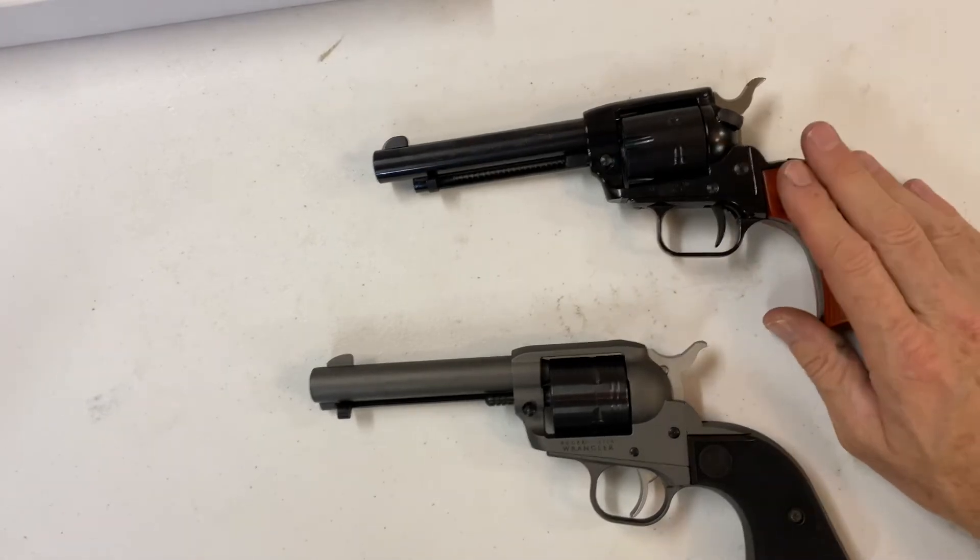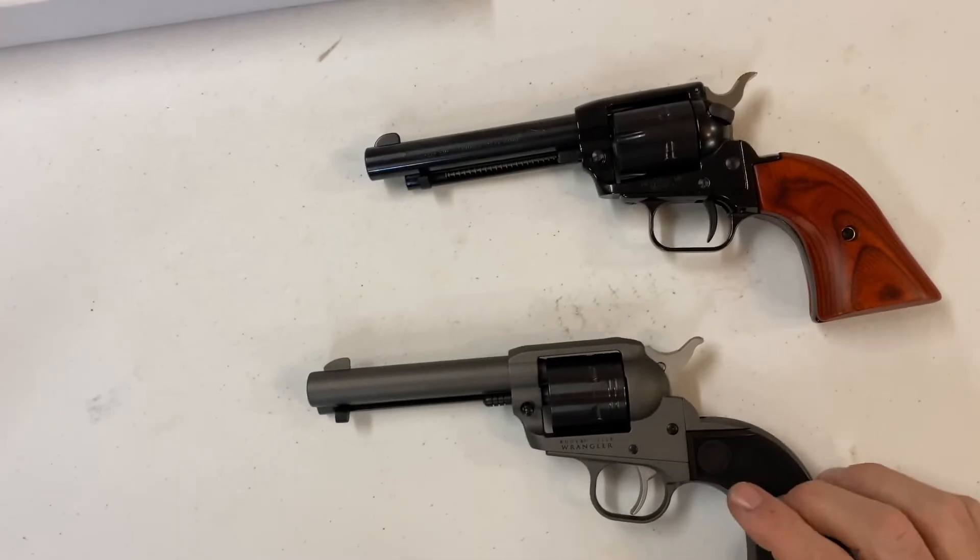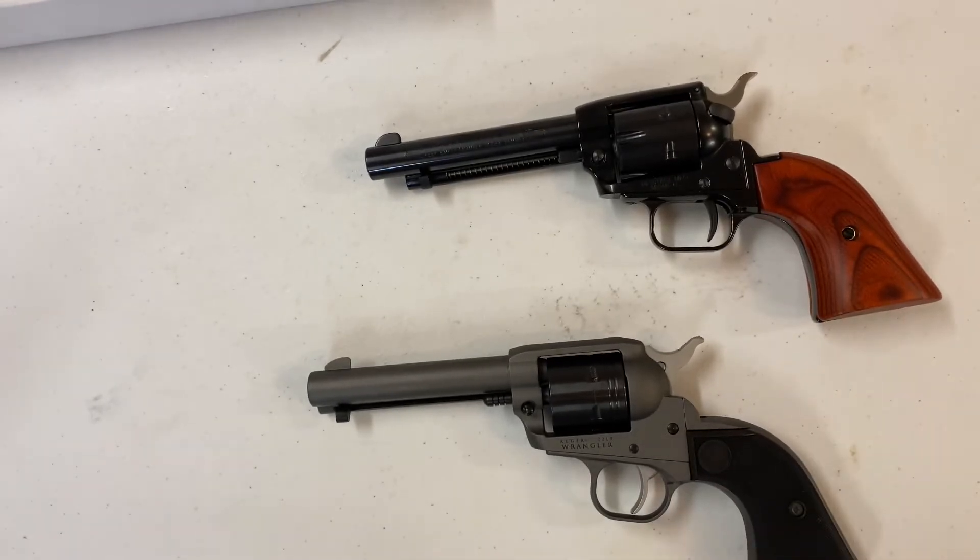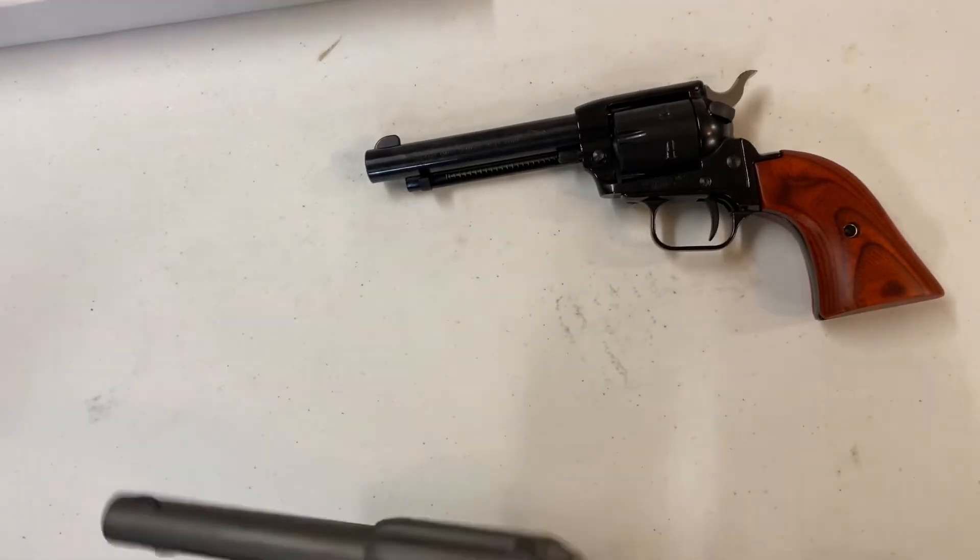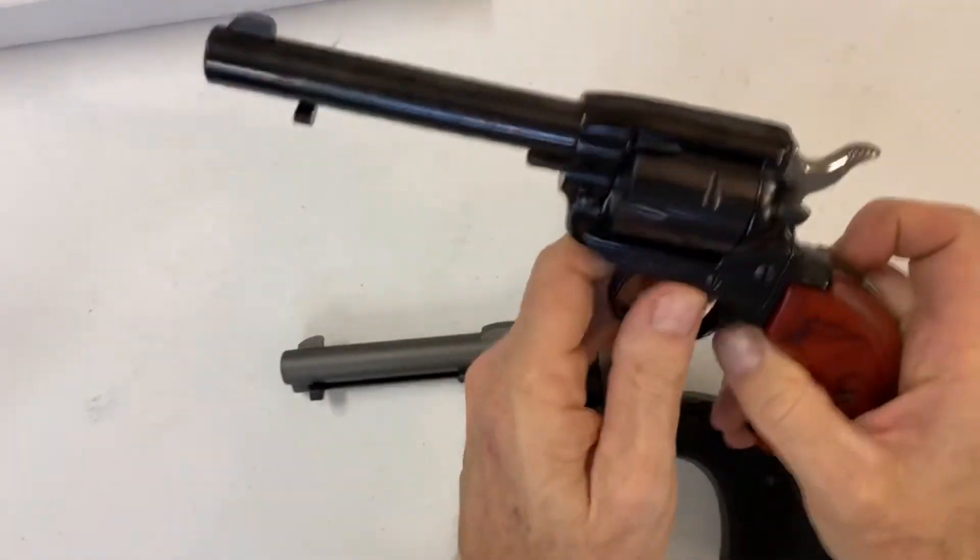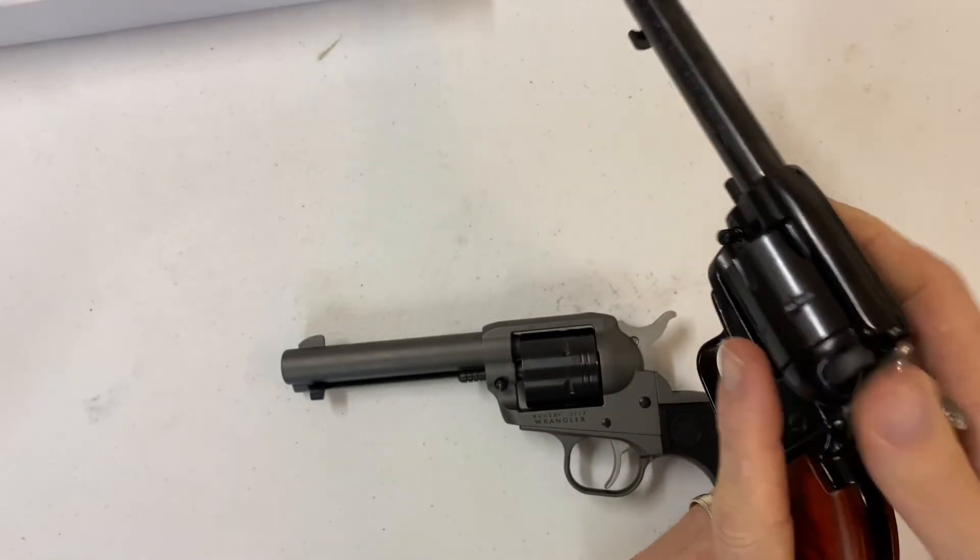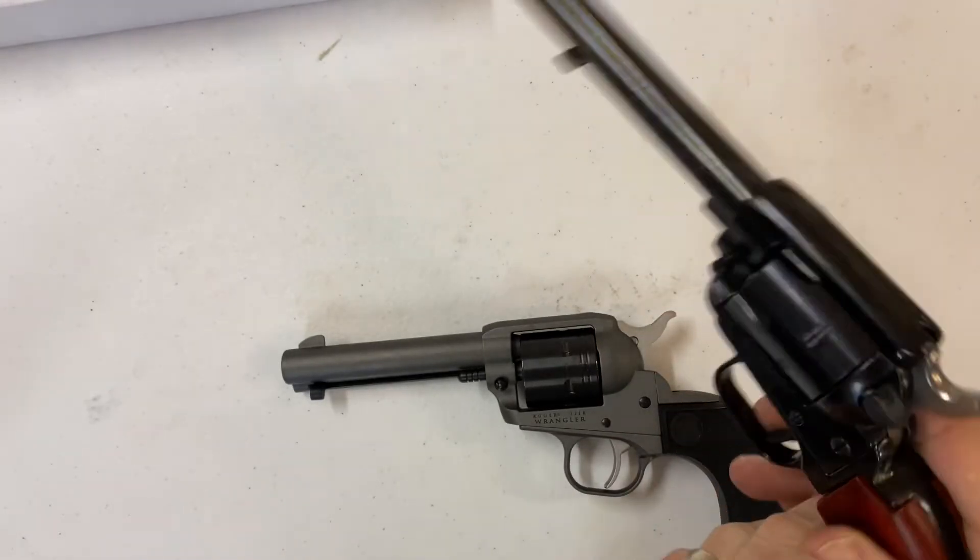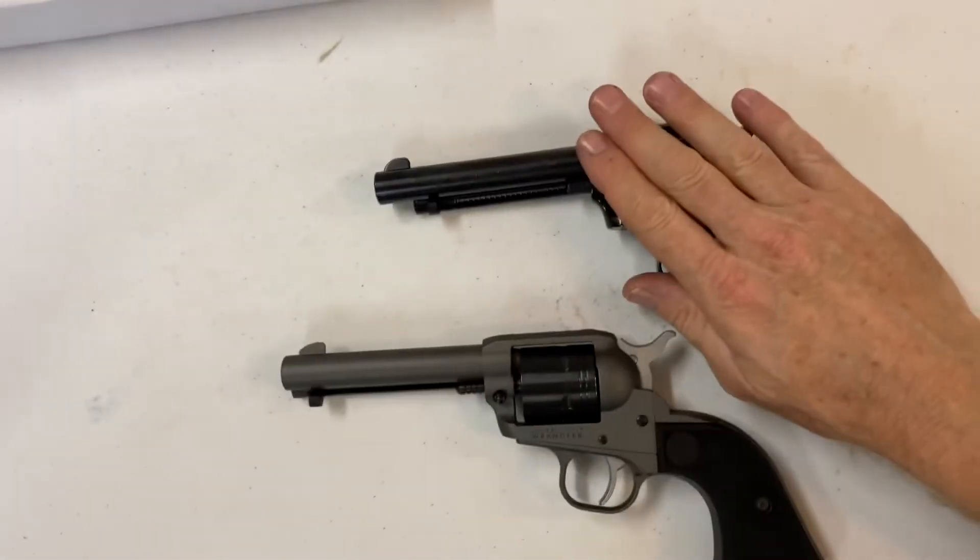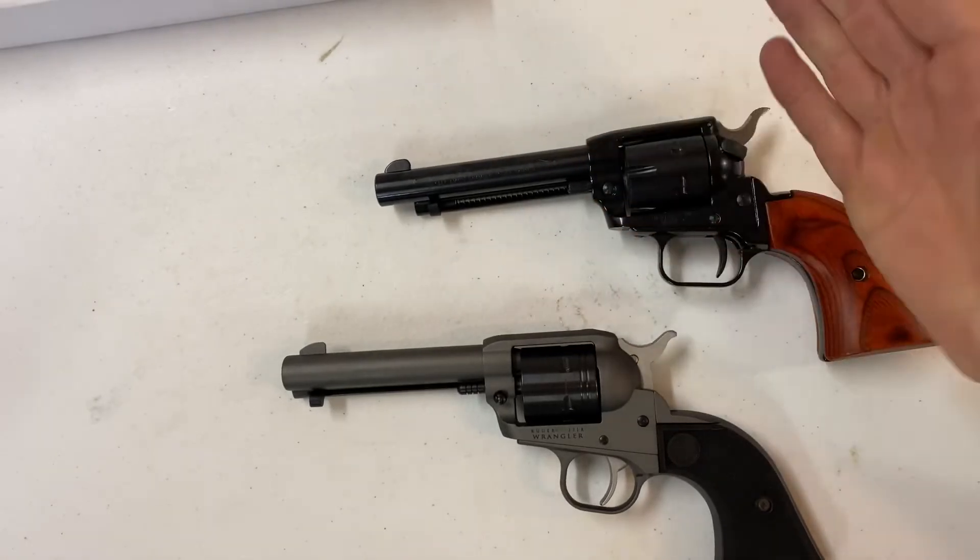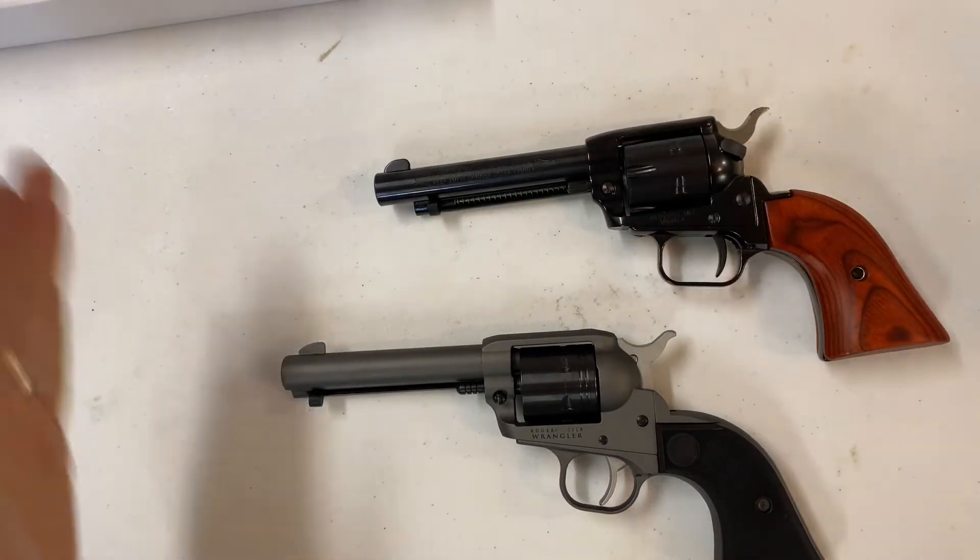You can get other grips for this, but I think you can get way more grips for the Wrangler because it works with the Single Six. Another con for the Roughrider is it has this ugly safety on it right here. But here are the pros for the Roughrider. You can get barrel lengths from a little two-inch barkeep all the way up to 16 inches, which is pretty neat.